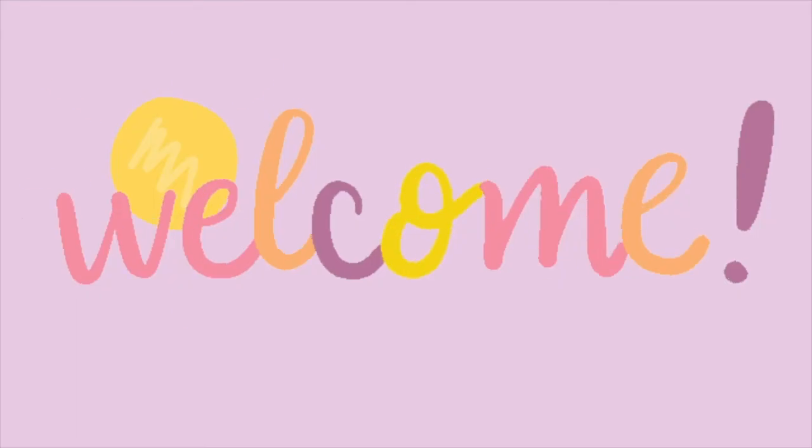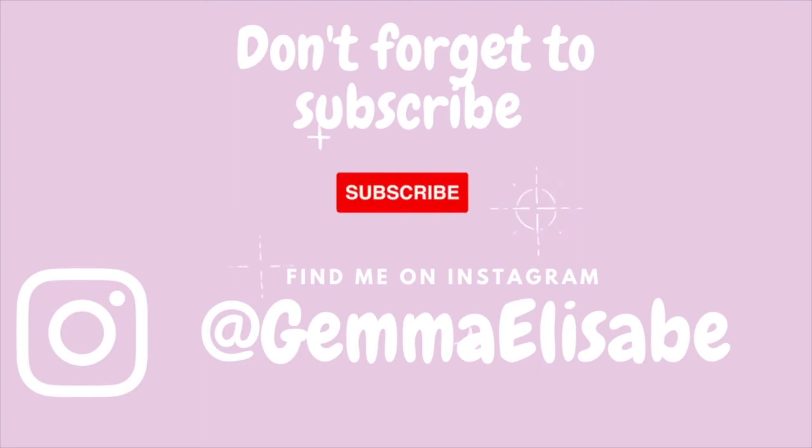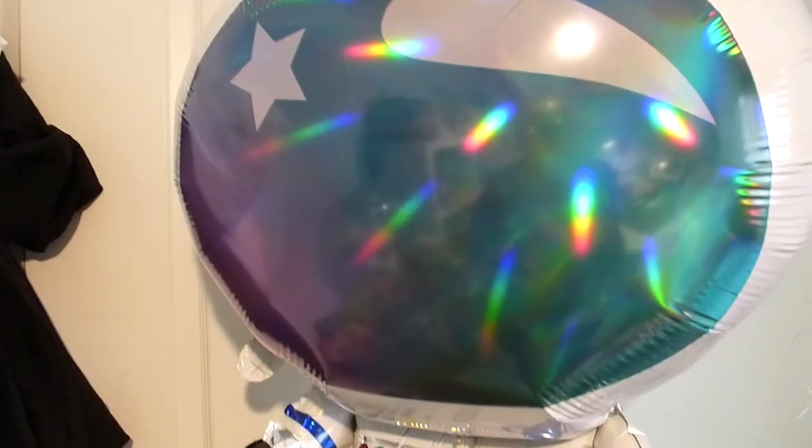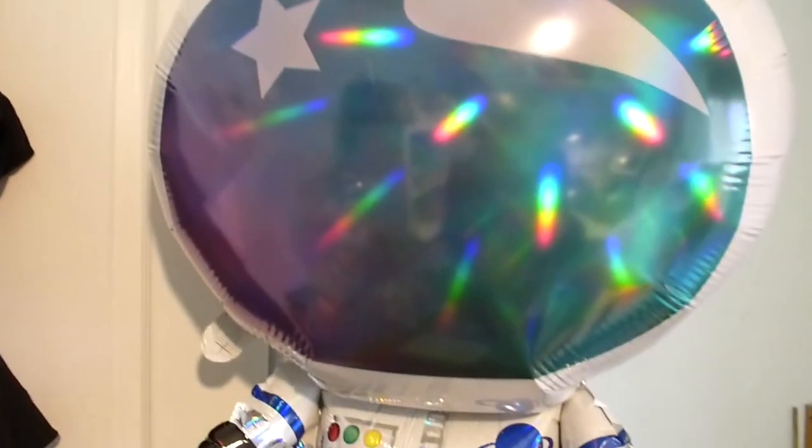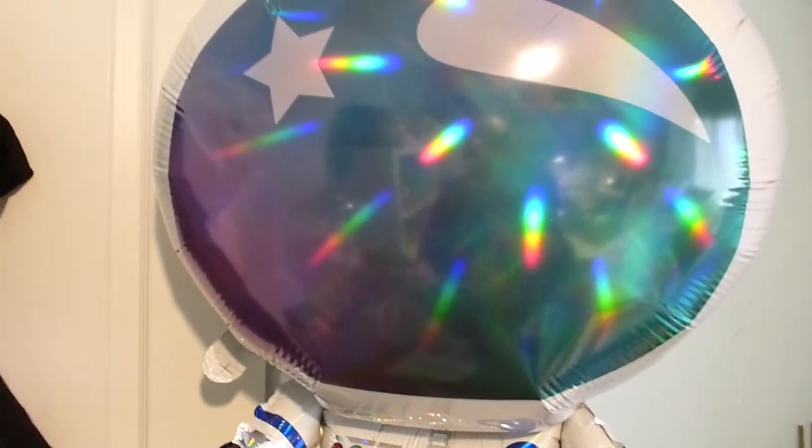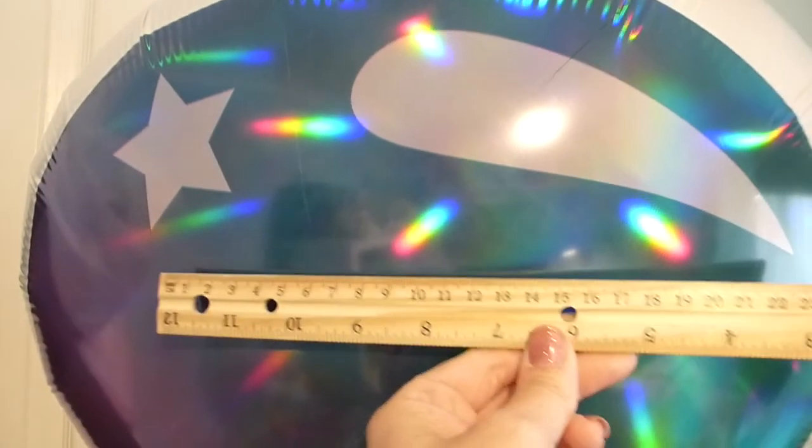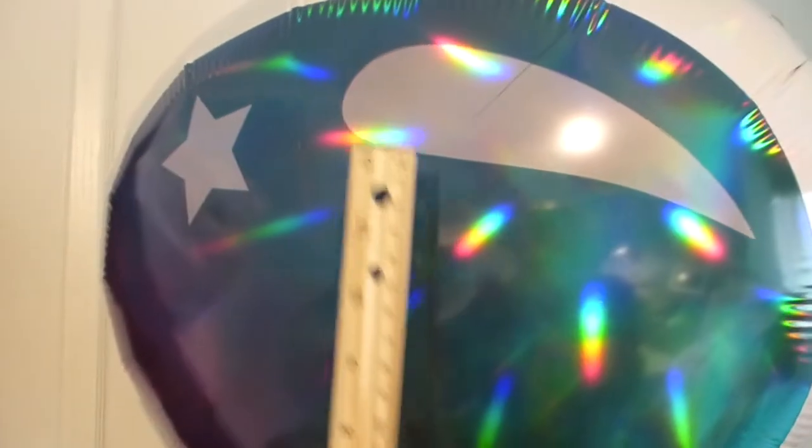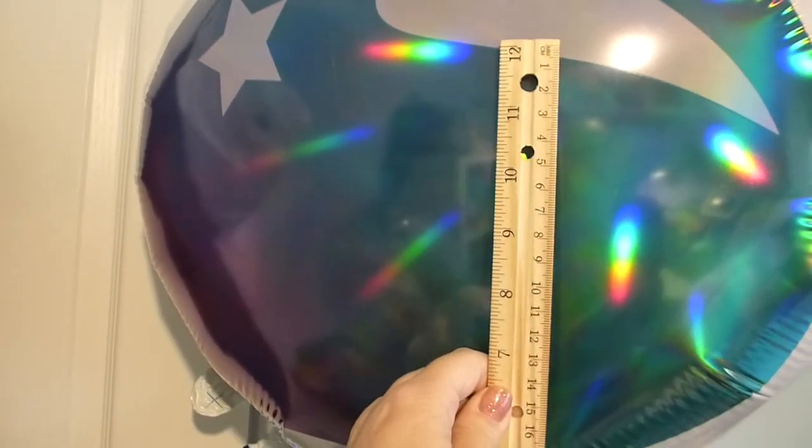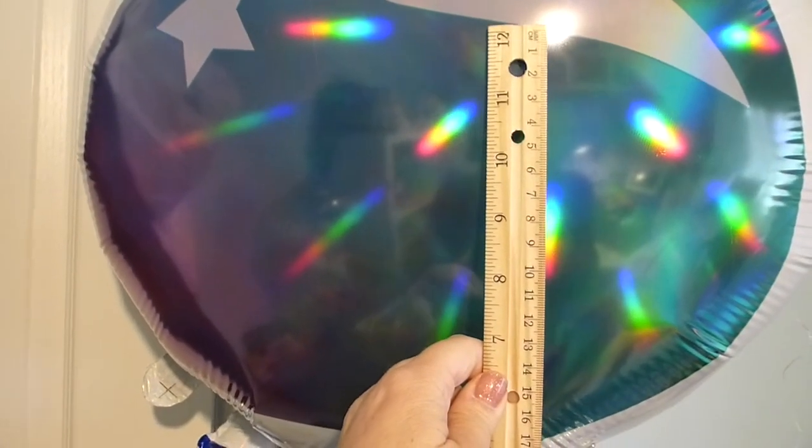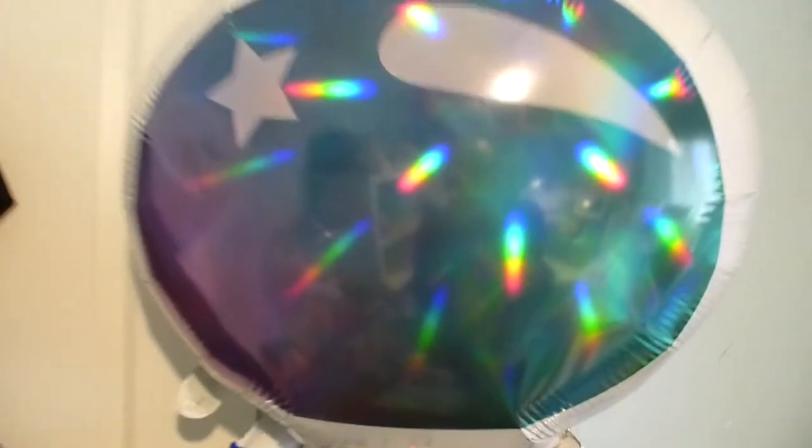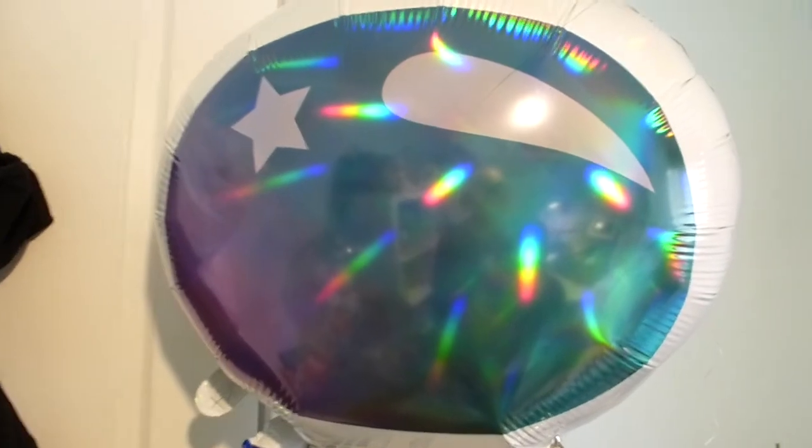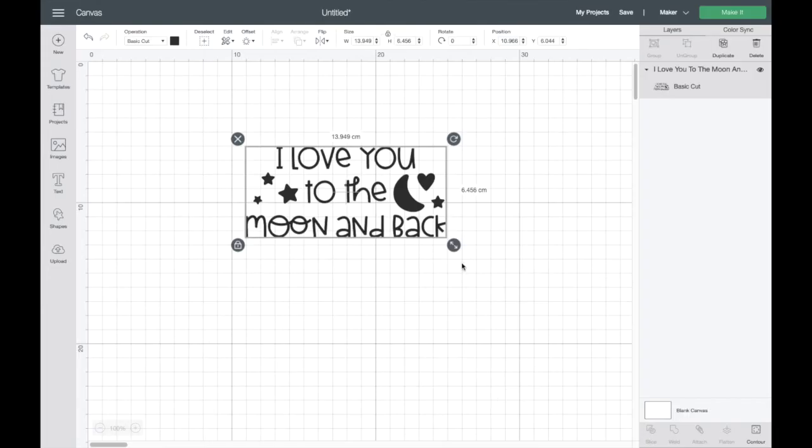The first thing that we need to do is just measure where we're going to put our decal on here, and I'm thinking that maybe it's going to be around there, so about 16 centimeters wide by about 15 or 16. So it's pretty square design size for this particular balloon.